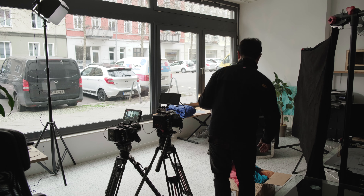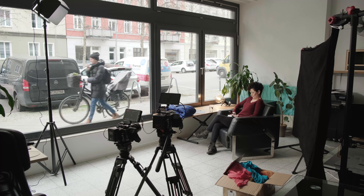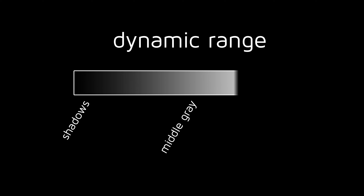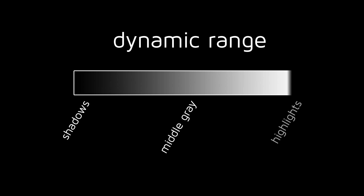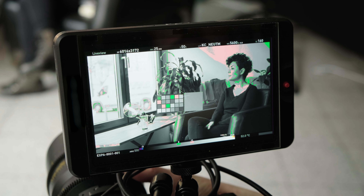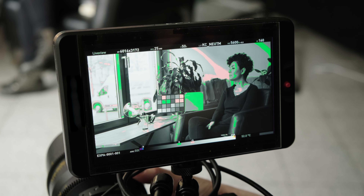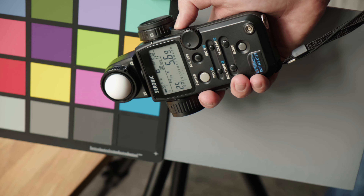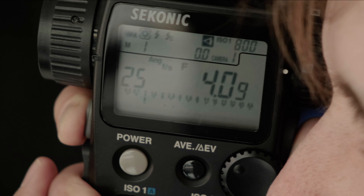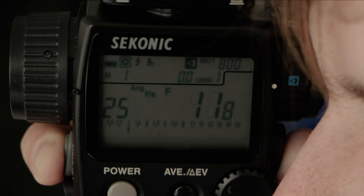In Part 1, we talked about how an important consideration in exposure is dynamic range, which is the range of brightness intensities from black to white that any camera sensor can capture. Even on a modern cinema camera like the Mavo LF, this range has its limits, so we need to decide how to use that dynamic range.